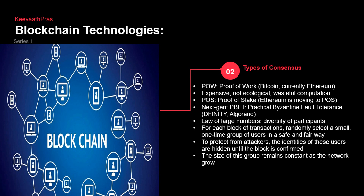Now the types of consensus — there are a lot of types of consensus in blockchain technology. We already discussed about proof of work. We have proof of work where big coins like Bitcoin and Ethereum — which is called the Bitcoin killer — and there is another one called Cardano, which is called the Ethereum killer. So the top three: proof of work is being used by Bitcoin and Ethereum. The disadvantage of proof of work is that it is very expensive and not ecological.